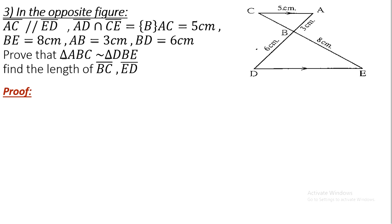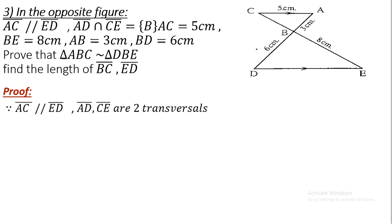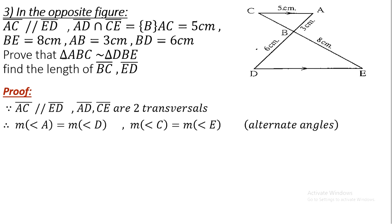Since AC is parallel to DE and we have two transversals — AD is a transversal and CE is a transversal — we can identify Z-angles. We can see a reversed Z and a regular Z. Therefore: measure of angle A equals measure of angle D, and measure of angle C equals measure of angle E. These are alternate interior angles.